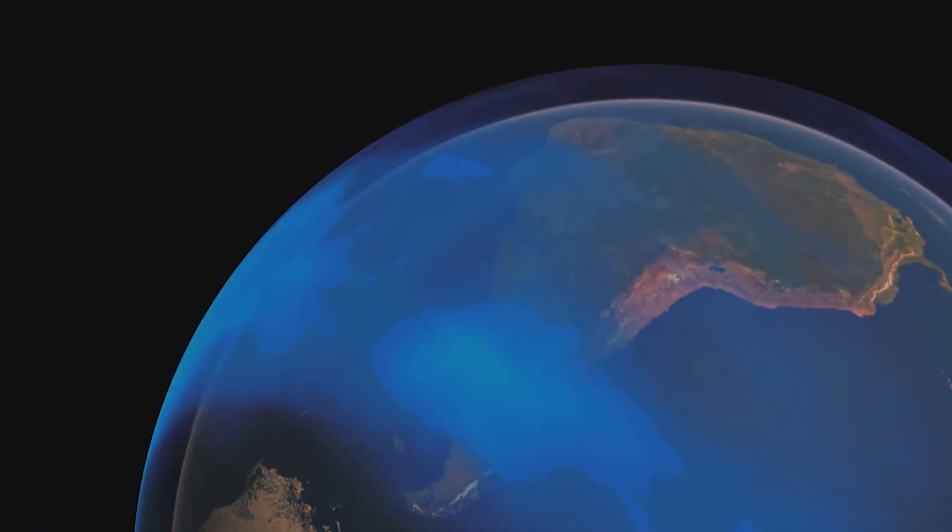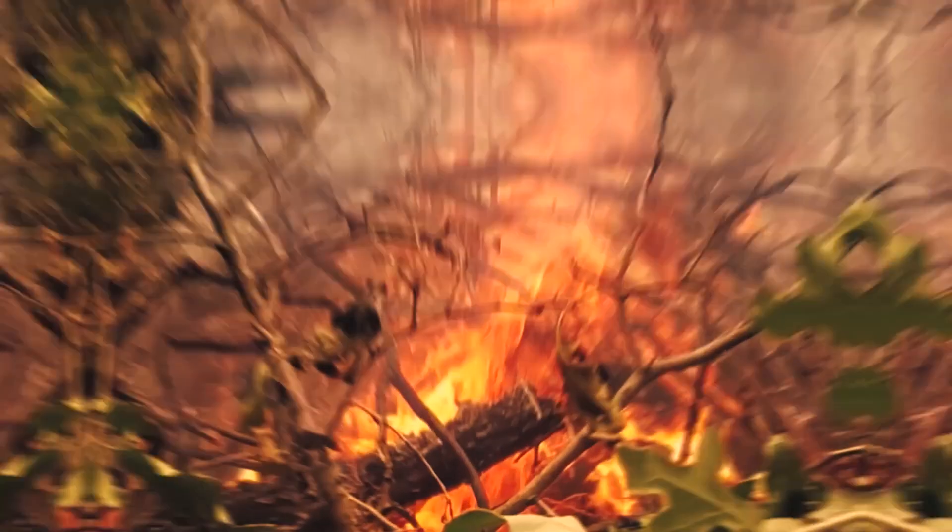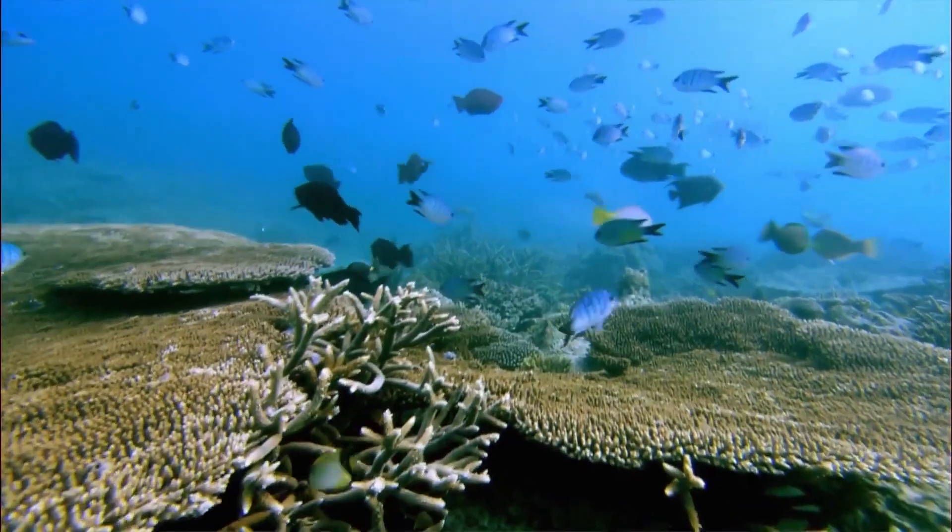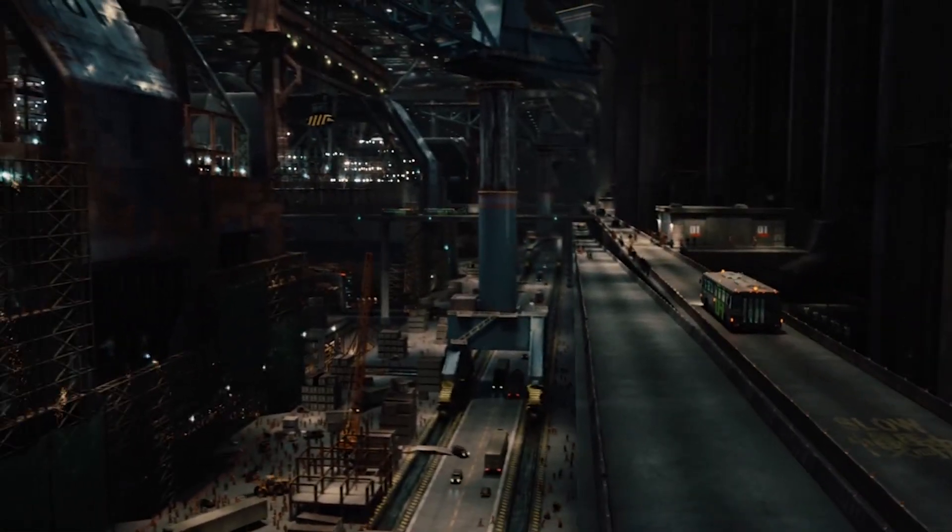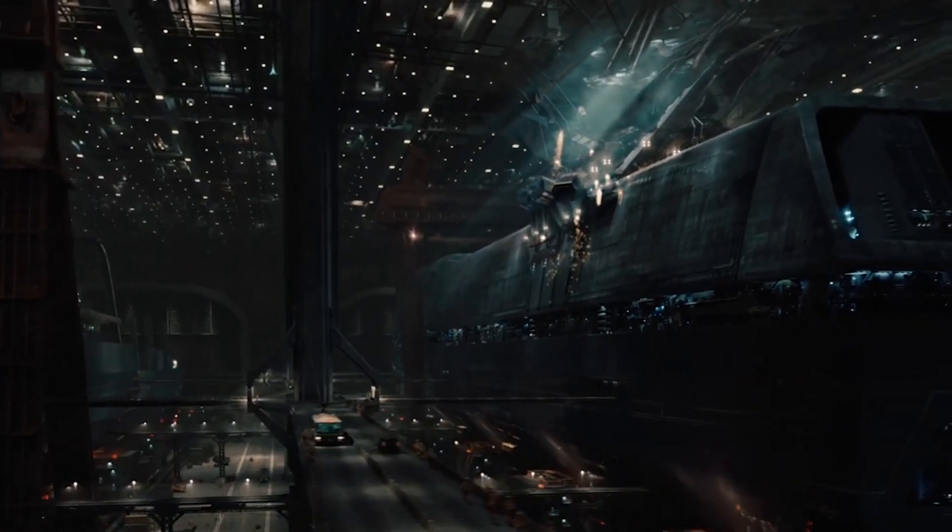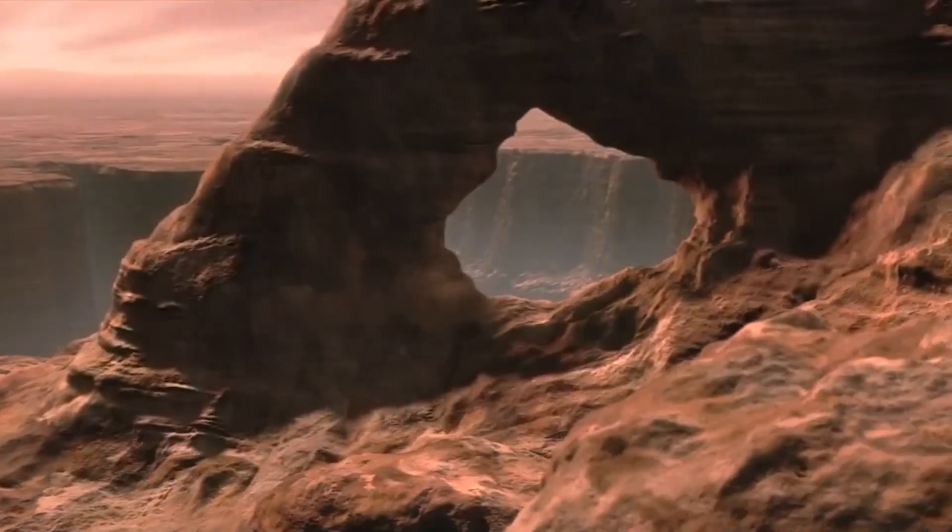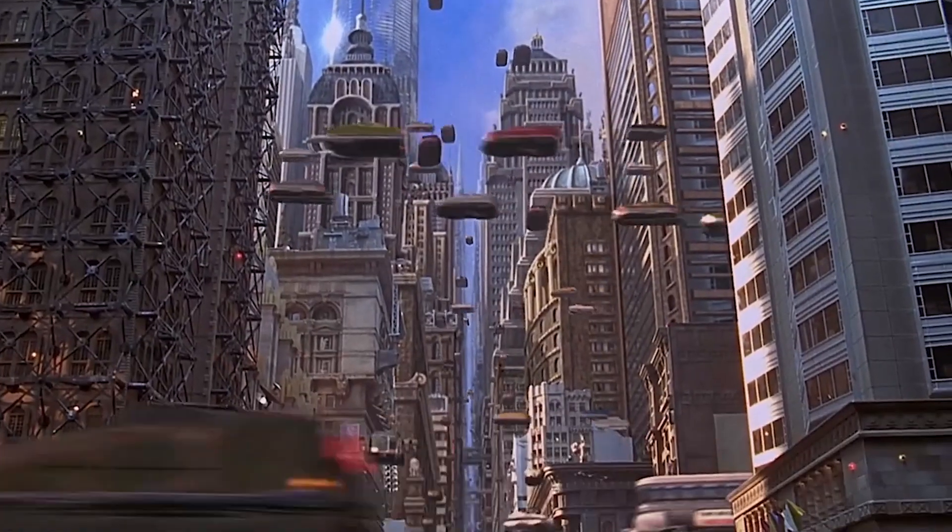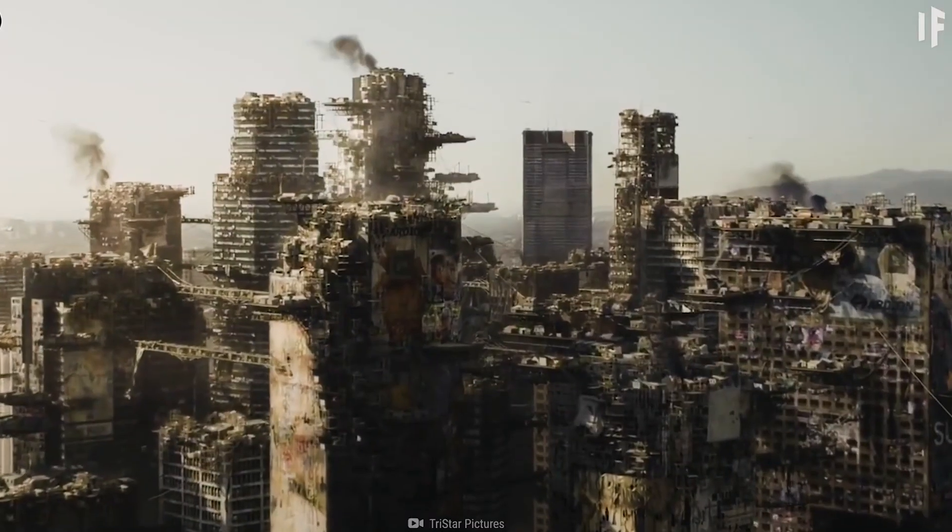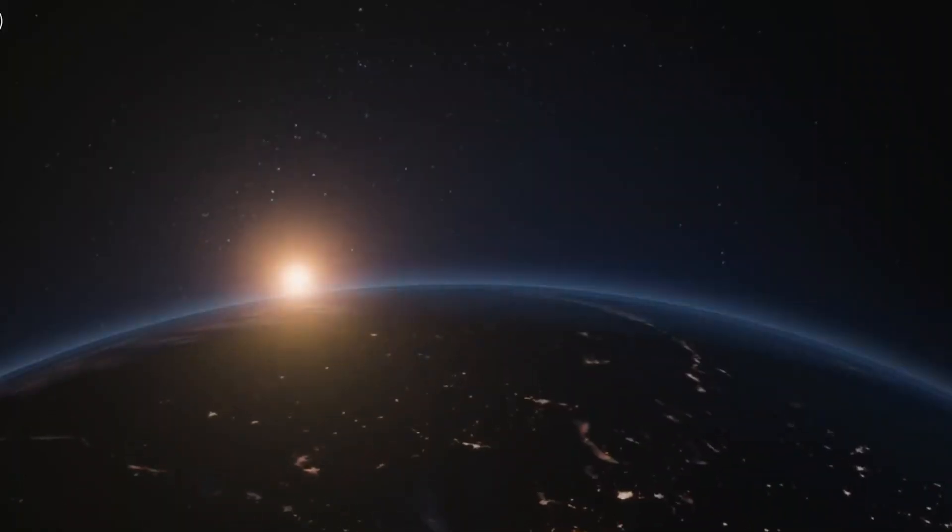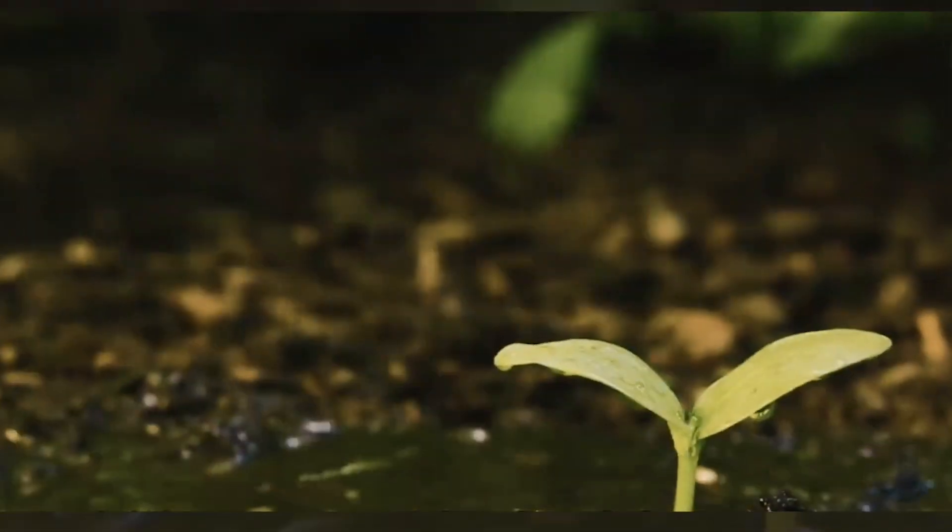Ecosystem Disruptions. A nearby GRB could also disrupt ecosystems in the affected region. The intense burst of radiation can directly impact plant and animal life, leading to genetic mutations, disruptions in reproductive cycles, and potentially even extinctions of vulnerable species. Additionally, the changes in atmospheric chemistry resulting from ionization processes may further impact ecosystems, altering nutrient cycles and affecting the survival and distribution of species. The specific ecological consequences would depend on factors such as the intensity of the burst, the duration of exposure, and the sensitivity of the local ecosystems. It is important to note that ecosystems have shown resilience in the face of natural and cosmic events throughout Earth's history. However, the localized effects of a GRB could still have significant short-term and potentially long-term consequences for the affected ecosystems.